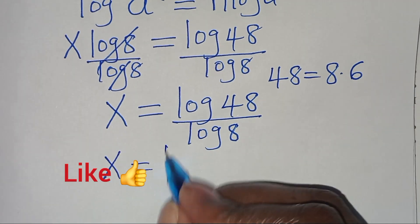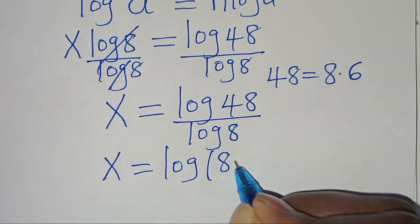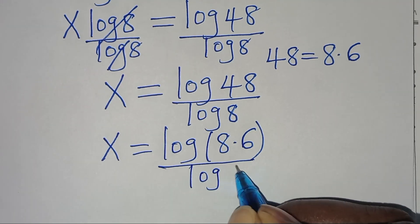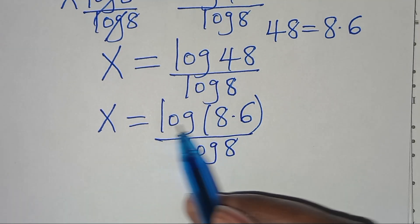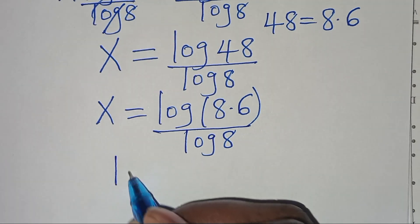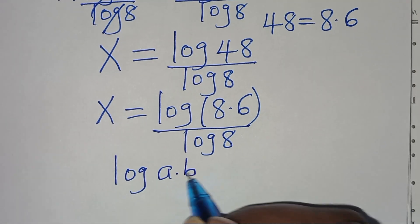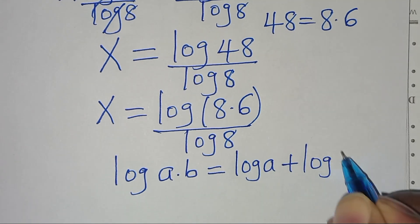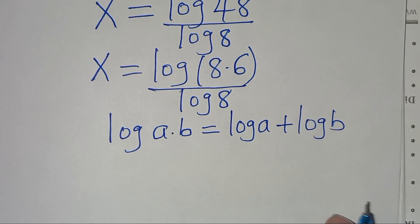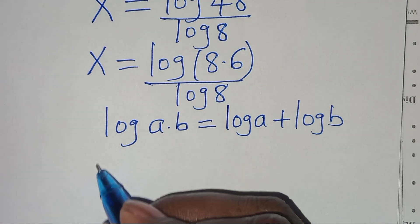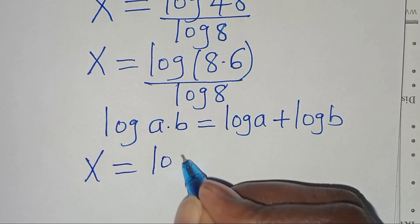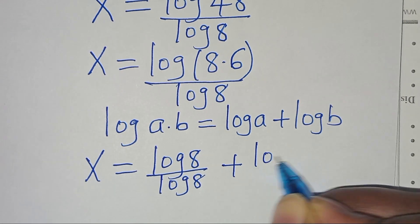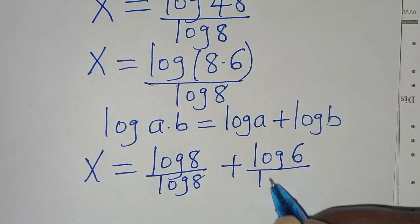Now x equals log(8 × 6) divided by log(8). We note that log(8 × 6) is in the form log(a × b), which equals log(a) + log(b). Applying this logarithm property, x equals log(8) divided by log(8), plus log(6) divided by log(8).